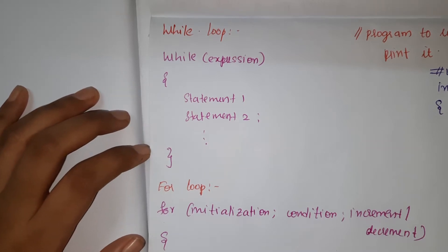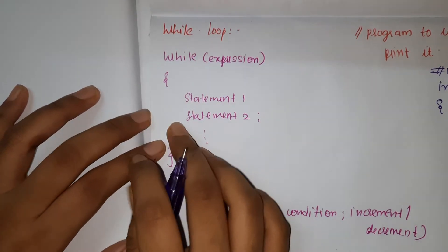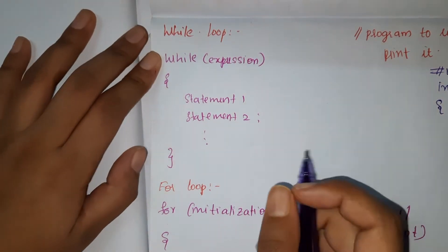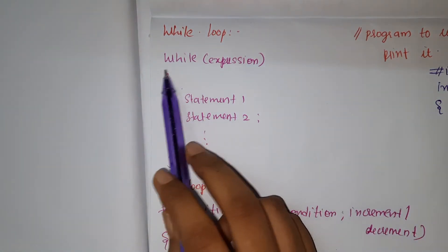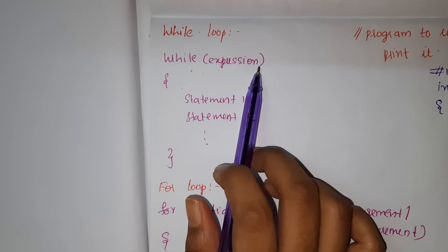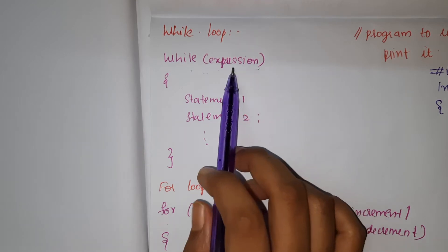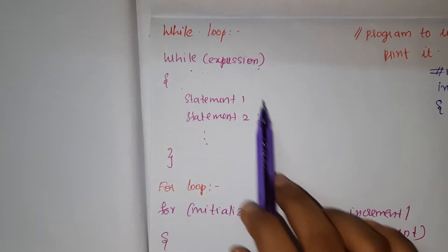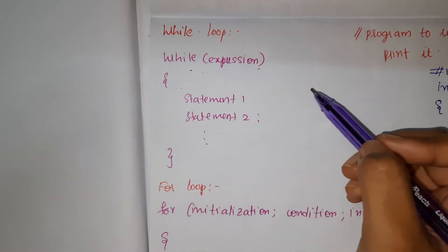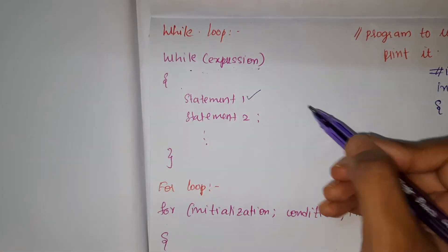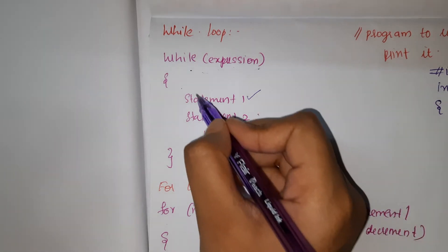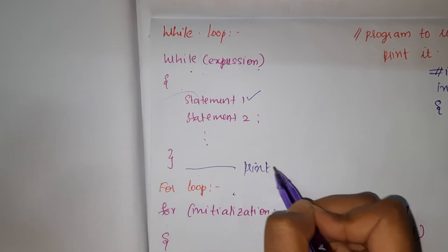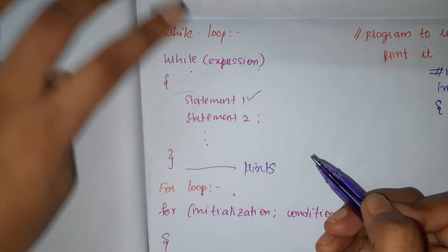Hello guys, welcome back. In this video we are going to discuss the while loop and for loop. I have given an example of a while loop. First we write 'while' and then the condition. We come into this loop and check the statements — if statement one is true, it checks all the conditions, then once done, it comes out of the loop and prints the value.